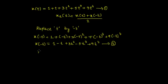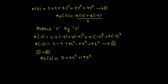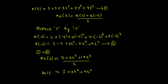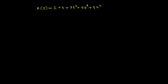To find the even part x_e of t, I add equation 1 and equation 2 and divide by 2. So: 1 plus 1 gives 2; t minus t cancel each other; 3t squared plus 3t squared gives 6t squared; and 9t to the power 4 plus 9t to the power 4 gives 18t to the power 4. Dividing by 2, I get x_e of t equals 1 plus 3t squared plus 9t to the power 4. This is the even part of the signal.